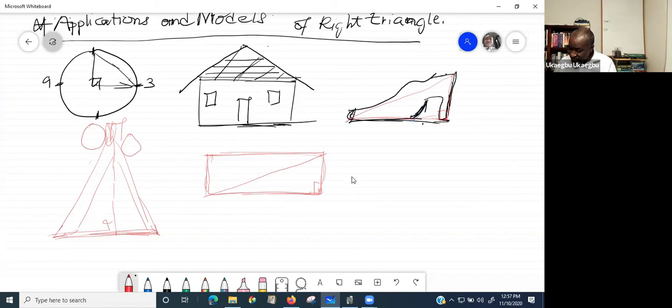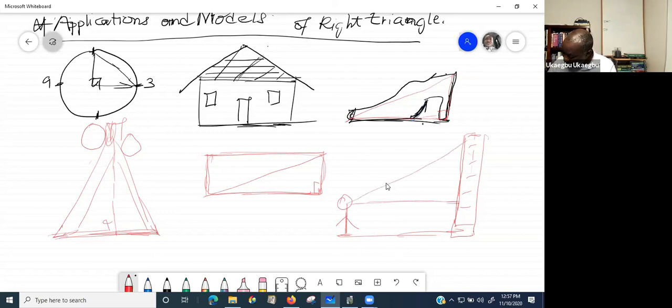How about if this is a building, a tall building like the ones you see in downtown? Someone is standing here, this is a gentleman or lady. When the person looks directly, they'll see something here. But the person may also look on top to see the top of the building. Can you see? Is that not a right triangle right there? So now you have an angle of elevation.